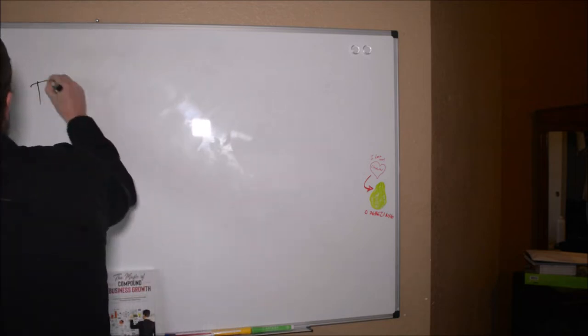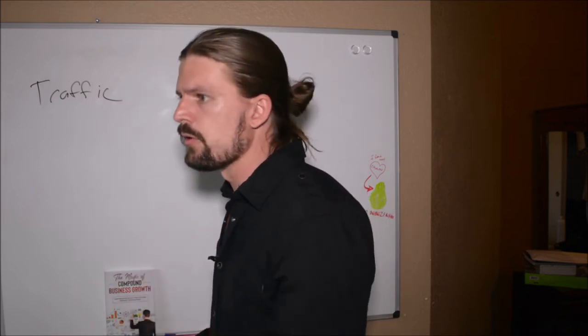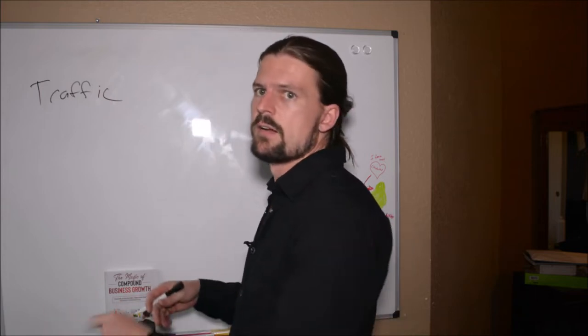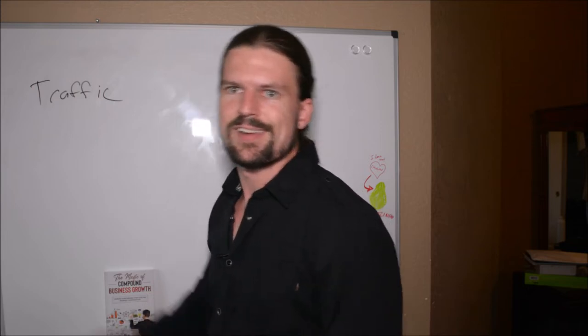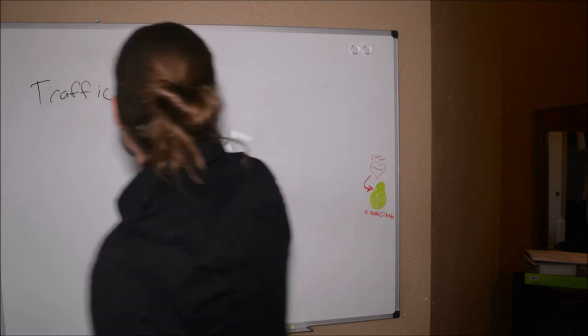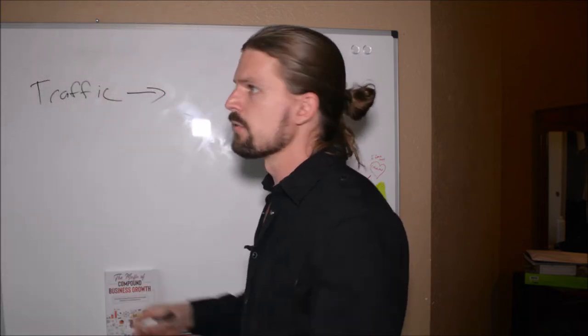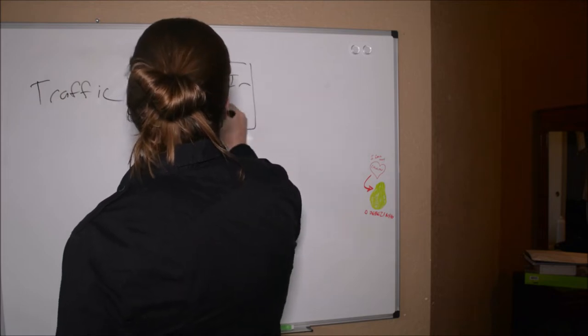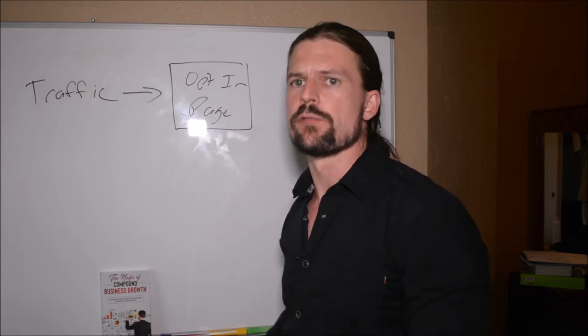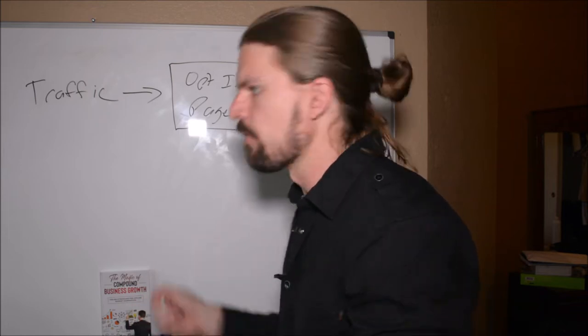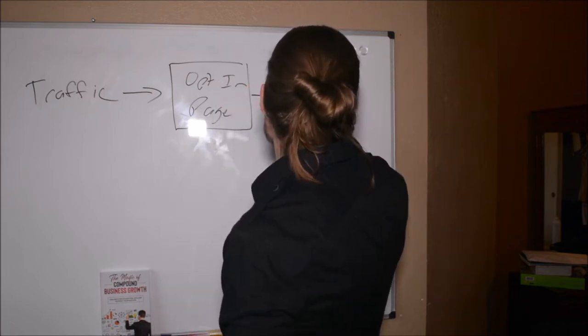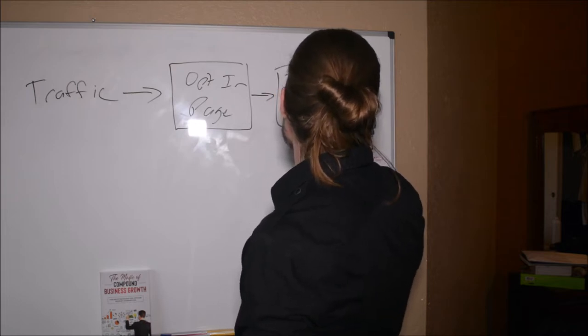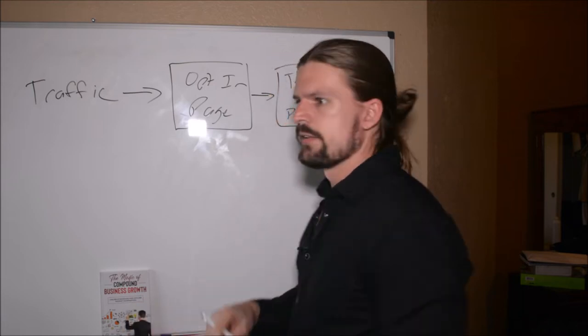Let's review the funnel structure from the last video. It's simple: you start with traffic — wherever people find you. You could advertise, get people from Google, get people in person. That traffic clicks on your ad or link and then goes to the first page of your funnel, which is called an opt-in page. On the opt-in page you offer them something for free in return for their name and email address. After the opt-in page you send them to a thank you page. You could deliver your free thing on the thank you page, but I recommend doing it in the email — and that's what we're going to get to now.